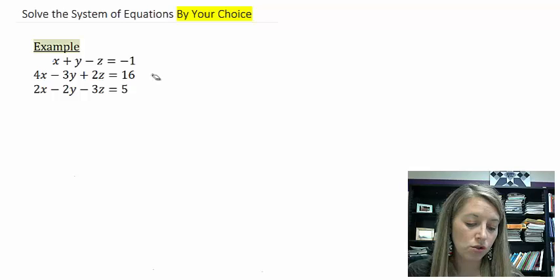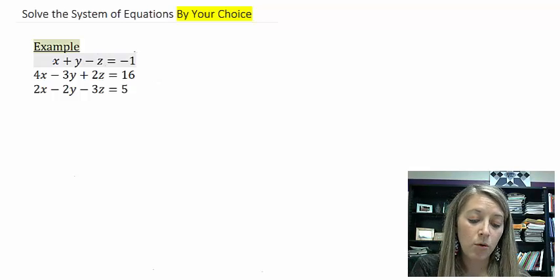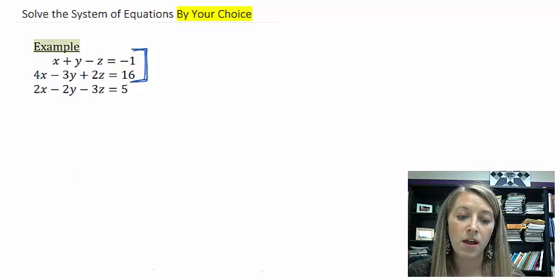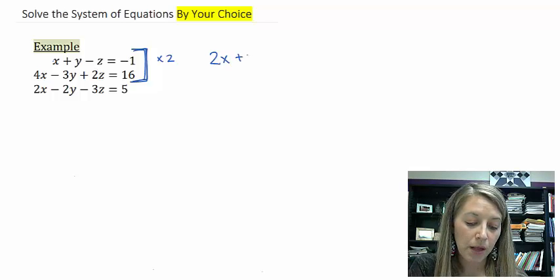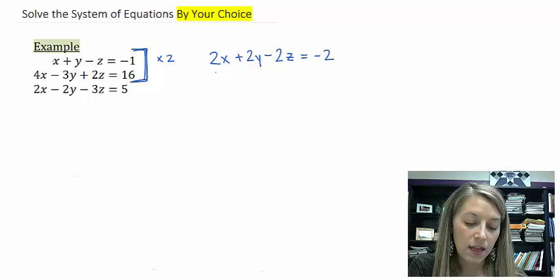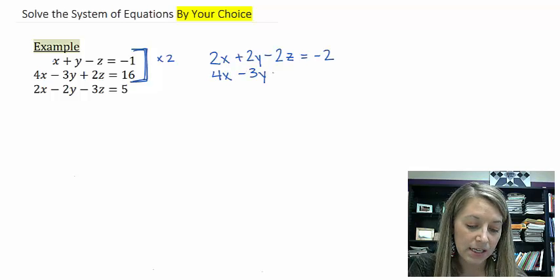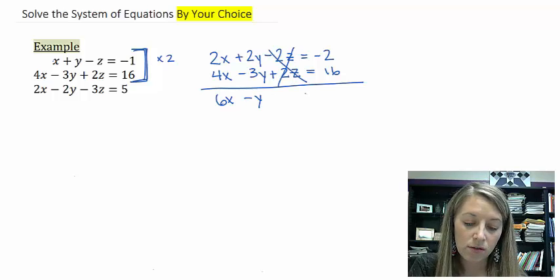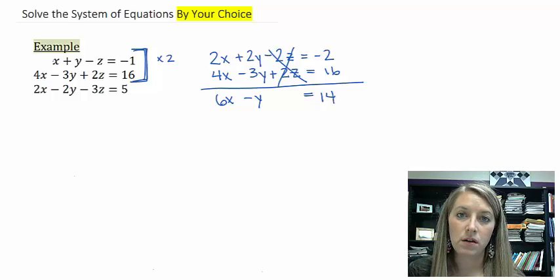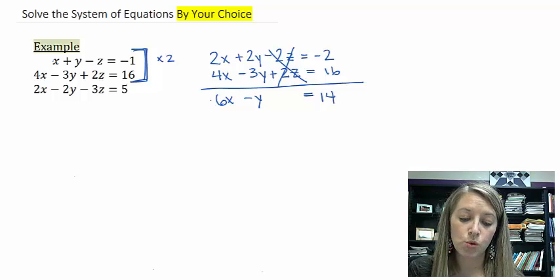I'm going to choose to eliminate the z variable. And I'm going to choose to start that by pairing up my first two equations. When I do that, I need to multiply my first equation times two, and that will eliminate the two with my second equation. So that gives me 2x plus 2y minus 2z is equal to negative 2. And then I add that to equation two, as is. So that gives me 6x minus y. My two z's cancel out, and that is equal to 14. So I have reduced it down to one equation with two variables.